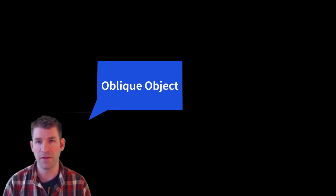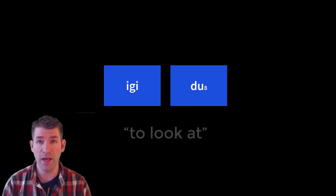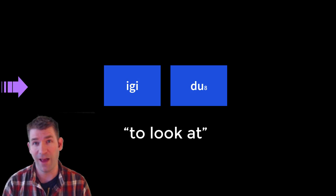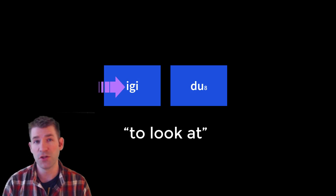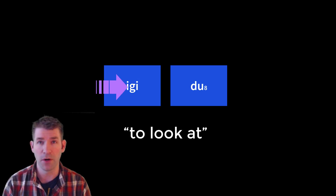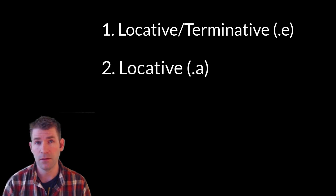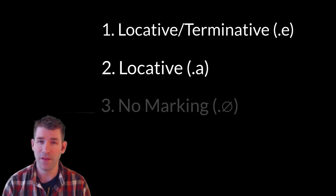But this leads to a slight complication. What do you do if your compound verb itself needs a direct object? We call that the oblique object. For example, the compound verb 'igi dua' means 'to look at.' How do they mark the direct object of a verb that already has a direct object in it? There are generally three ways that Sumerian marks this oblique object: 1) they will use the locative-terminative -e; 2) they will use the locative -e; 3) they won't mark it at all.